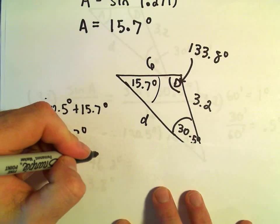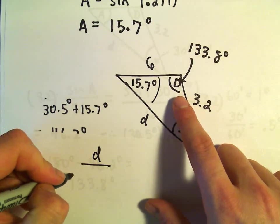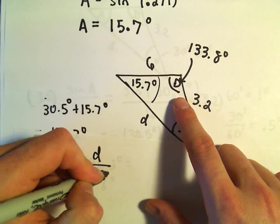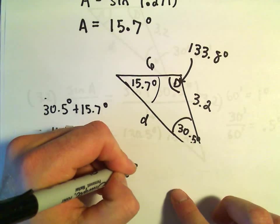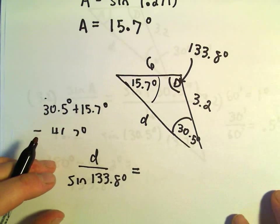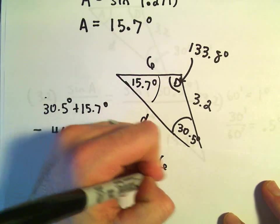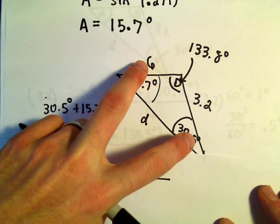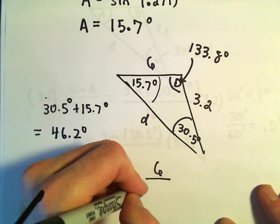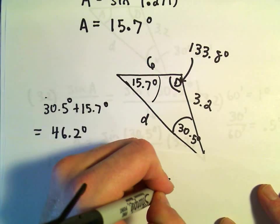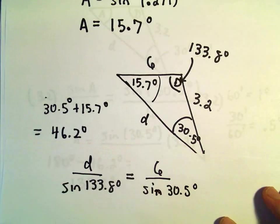And now we can just simply use the law of sines to figure out our missing length D. So little d over sine of 133.8 degrees, and now it doesn't matter what side we relate it to. I'm going to relate it to the first two sides we were given.